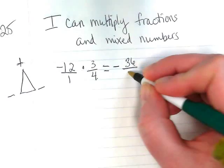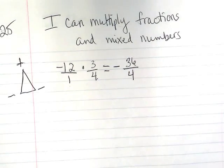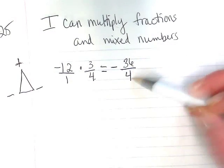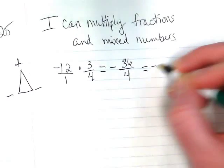1 times 4, and I get 4. But as we know, we need to reduce things to simplest terms. And negative 36 divided by 4 is going to give us a negative 9.